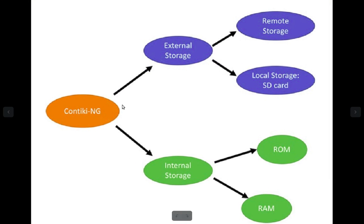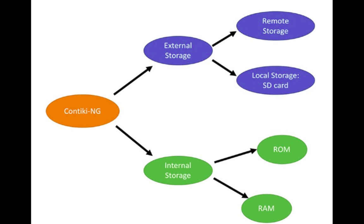We can refer to this block diagram where we have Contiki OS with external storage and internal storage. Under external storage we have two options: remote storage and local storage through SD cards. In internal storage we have RAM and ROM. Externally we can use SD cards or flash memory, and we can also go for remote cloud storage.